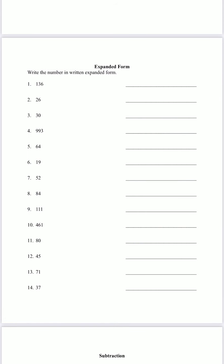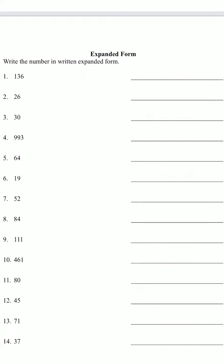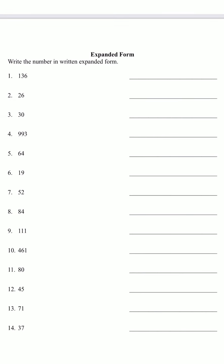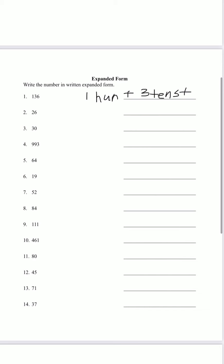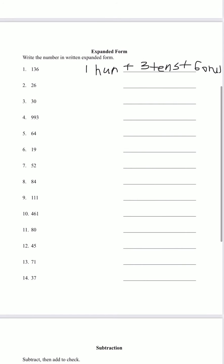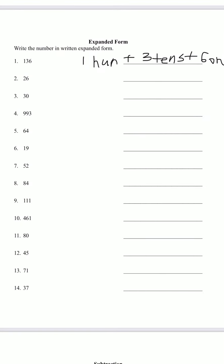Expanded form. Write the number in written expanded form. Let's try number one. 136 is our number. So we're going to have 100 plus three tens plus six ones. Okay. Number two is going to be 26, right?